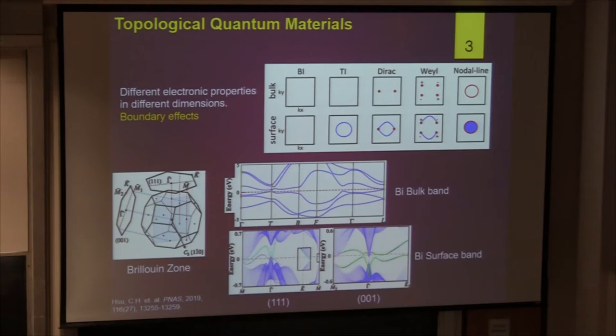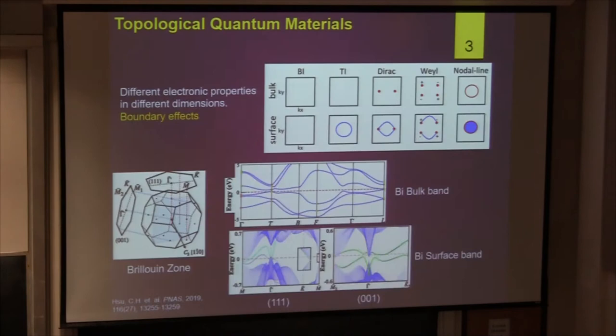What are topological quantum materials? If we want to say it very simply: it's a material that has different electronic properties in different dimensions. Let's take the topological insulator as an example. The three-dimensional topological insulator — for the bulk, the 3D — it's an insulator. If we measure the surface, because the band is protected, it can conduct electricity. So for the bulk it's an insulator; for the surface it's a conductor. We call it a topological material — they have different properties.